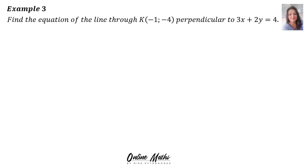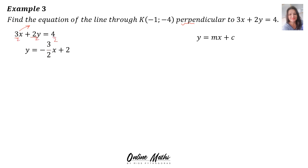Example 3: find the equation of the line through K(−1, −4), perpendicular to the line 3x + 2y = 4. We want y = mx + c. Starting with 3x + 2y = 4 — put it in standard form: the 3x walks across and we divide through by 2, giving y = negative 3 over 2 x plus 2. That's the green line. We are looking for the blue line's equation, which is perpendicular to the green line.